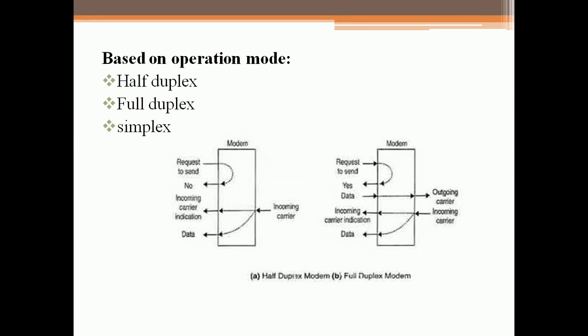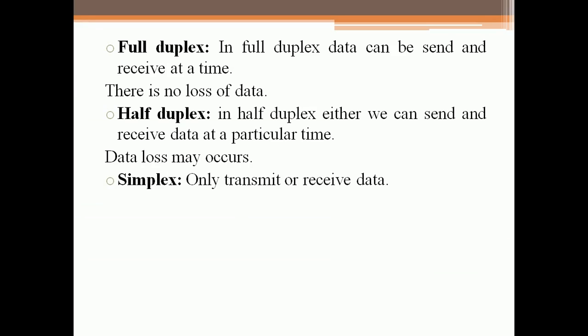Modems are also based on operation mode: half duplex, full duplex and simplex. Now what is half duplex, full duplex and simplex? In full duplex mode, the signal is sent in both directions at the same time and both devices transmit signal at the same time. But in case of half duplex, signal is sent in both directions but one at a time and both devices can transmit the signal but one at a time.